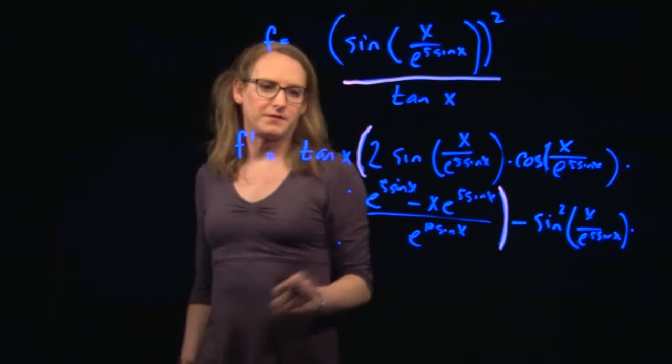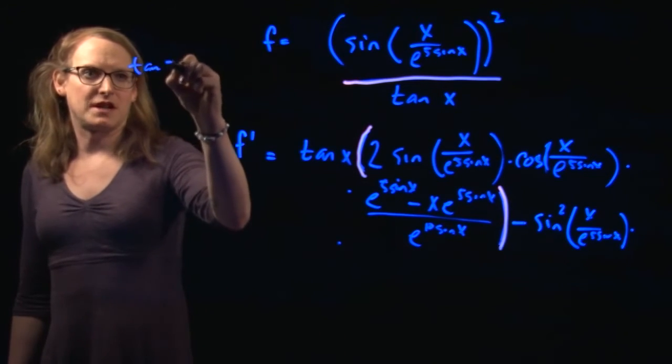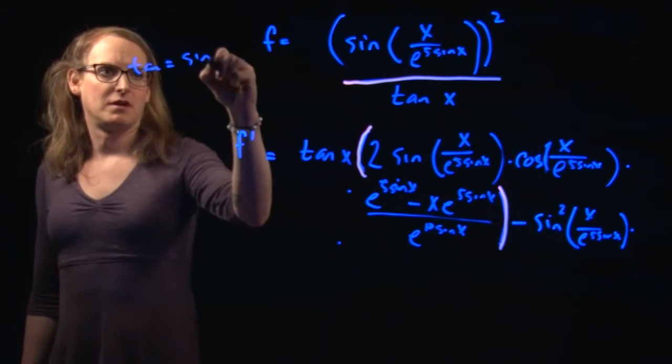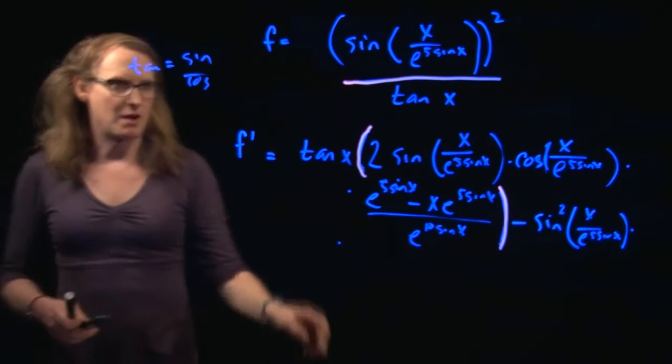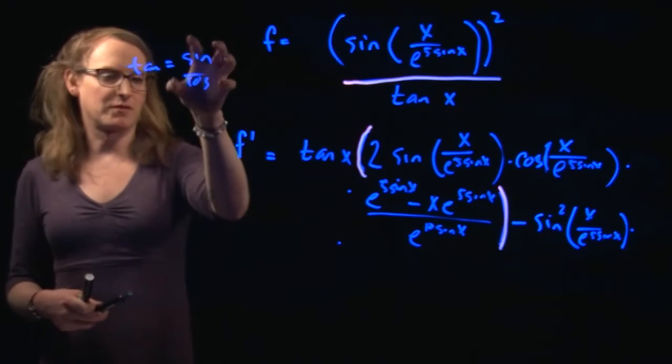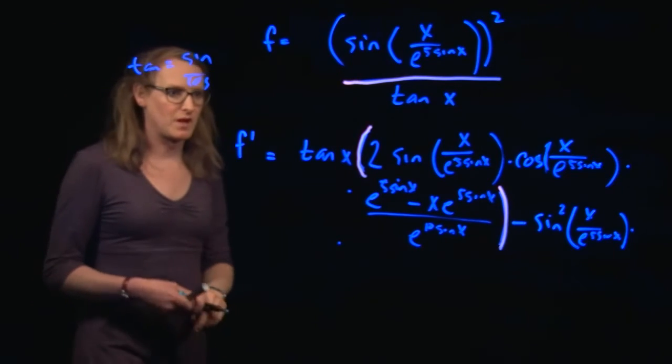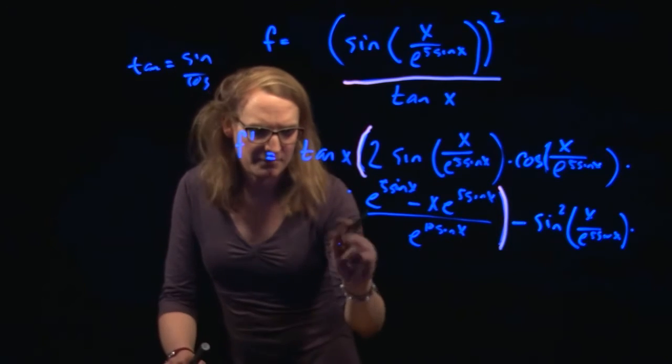So now I need the derivative of tangent. Let's do a little side work. Tangent equals sine over cosine. I remember that one. So the derivative of tangent, we've got to use the quotient rule on. So this is going to be times low cosine of